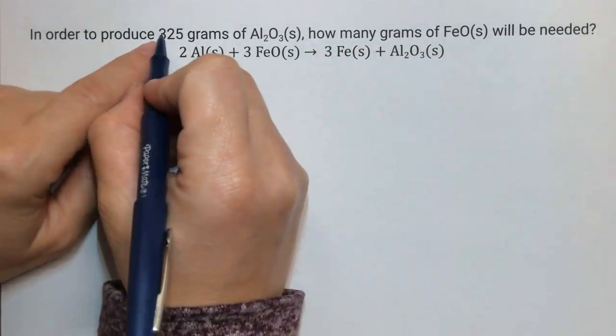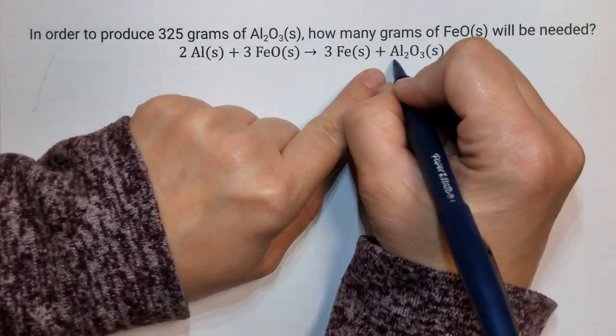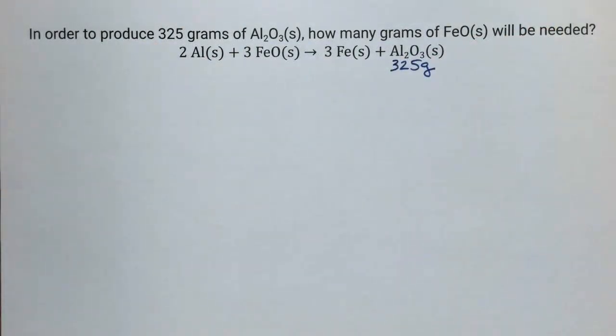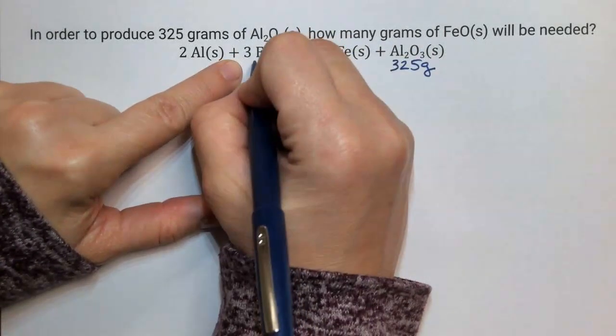In order to produce 325 grams of aluminum oxide, how many grams of FeO (iron(II) oxide)